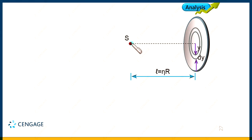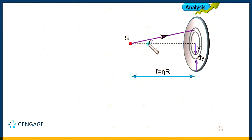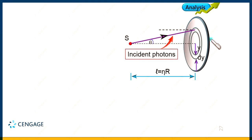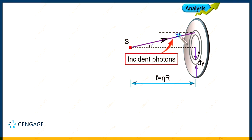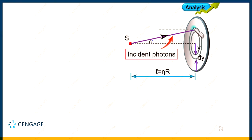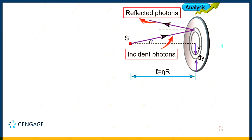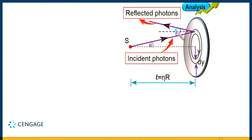Let us start a ray from S incident on the ring surface. Let this angle with the dotted line (the axis of the disk) be theta. That means the incident photons make angle theta with the axis, and this angle with the normal is also theta. Because this is a mirror, the angle of incidence equals the angle of reflection, so the photon will reflect back and this reflected angle is also theta.